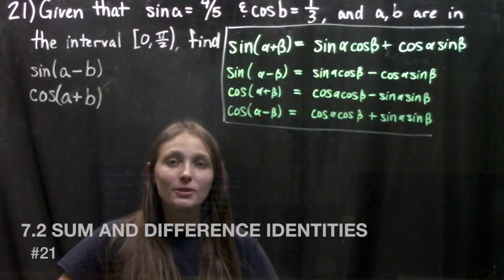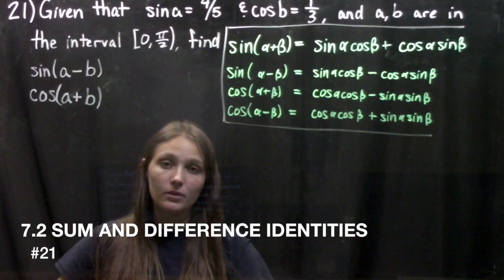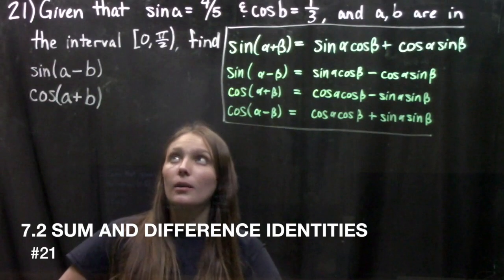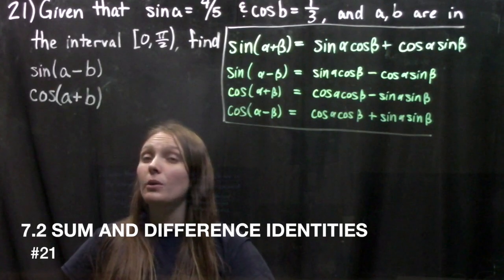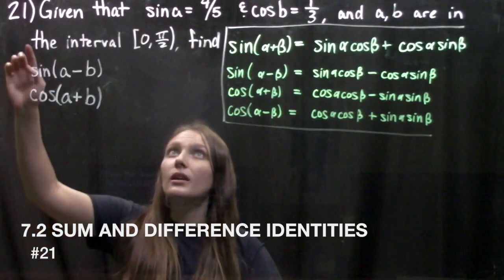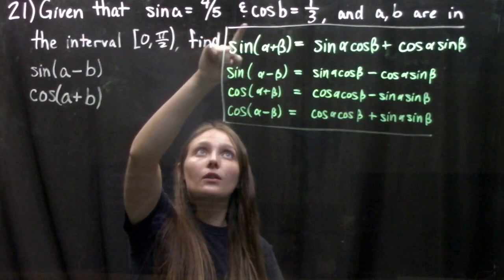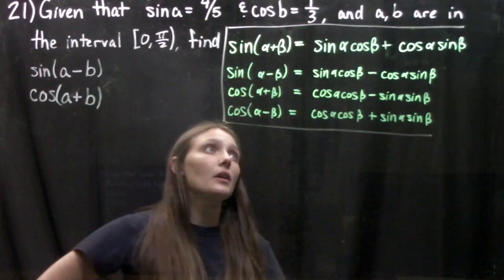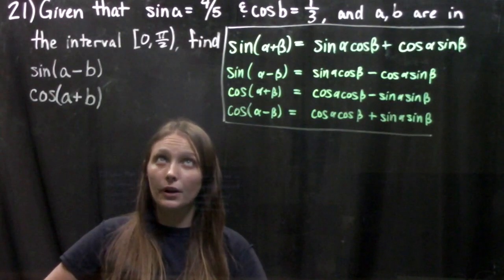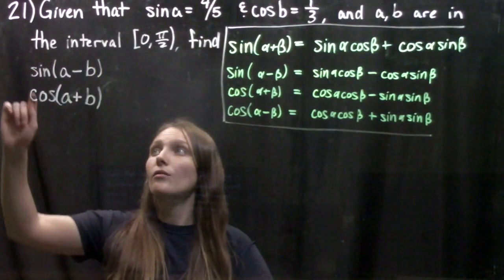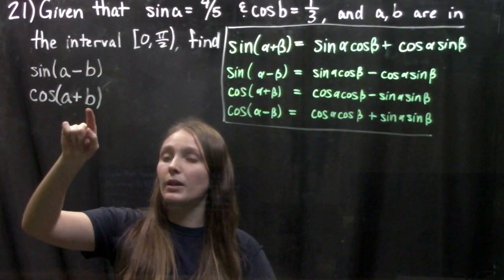Hey guys, today we're going through chapter 7 on trig identities and equations, section 2, covering sum and difference identities. In problem 21, given that sine of A equals 4/5 and cosine of B equals 1/3, with A and B in the interval from 0 to π/2 radians, we need to find sine of A minus B and cosine of A plus B.